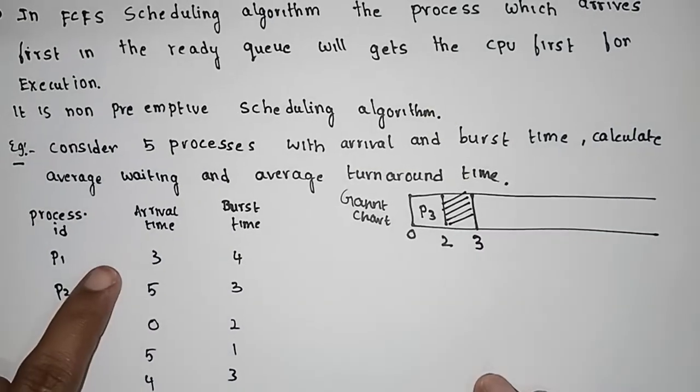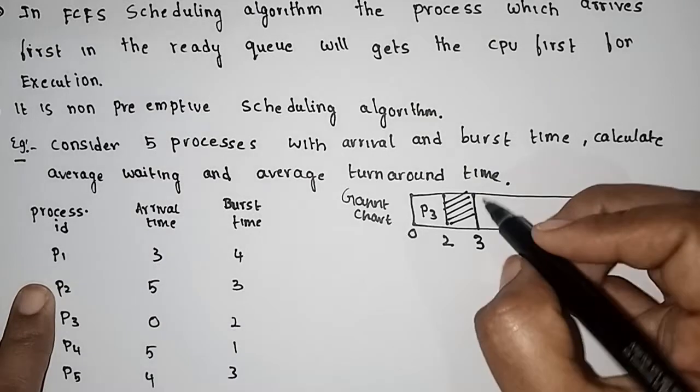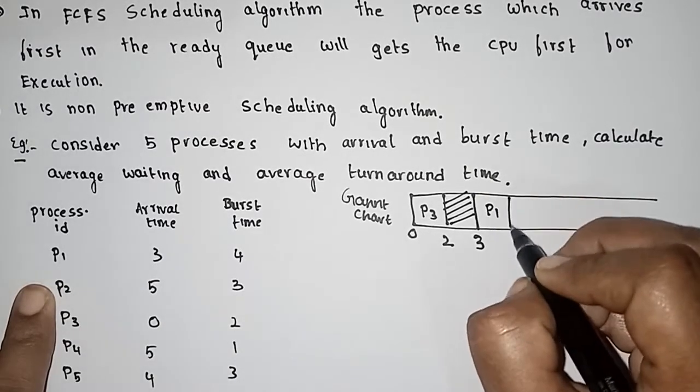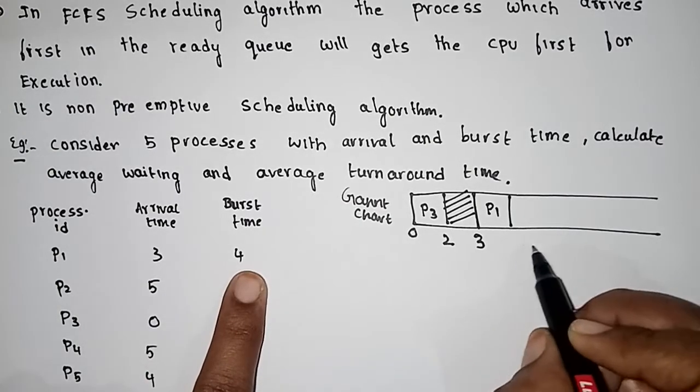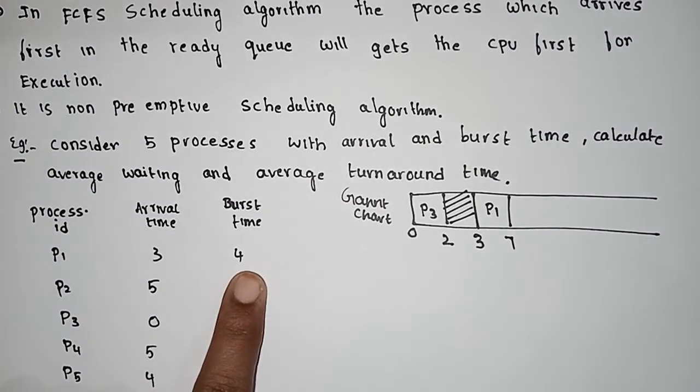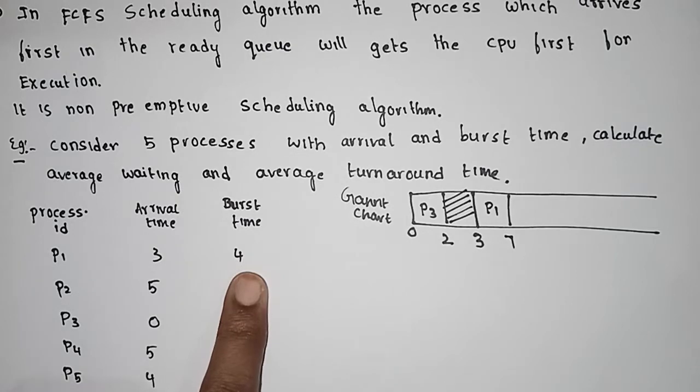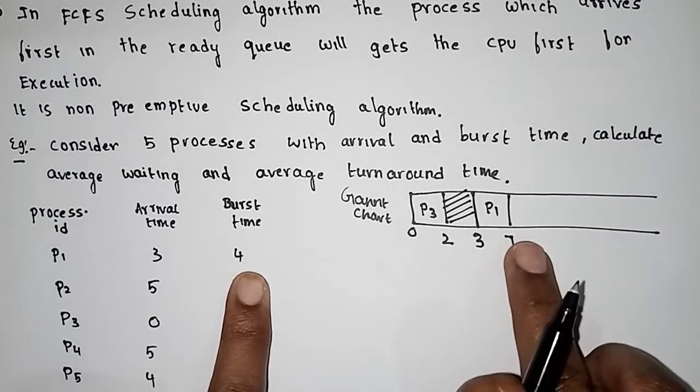Then at arrival time 3, P1 gets the CPU. P1 has a burst time of 4. Here it is 3, so 3 plus 4 is 7 units of time. P1 is completed. Now P1 is at 7.